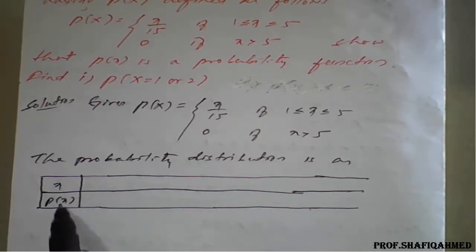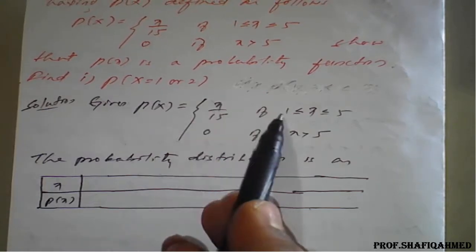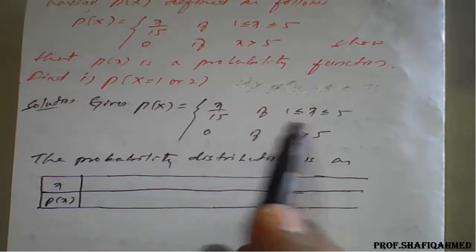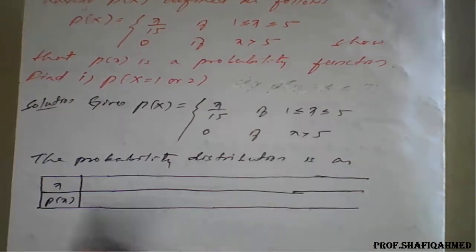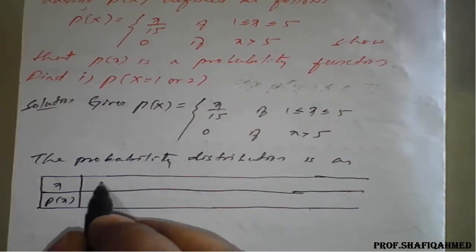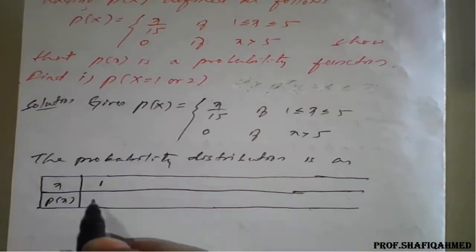X and P of X. Here X will take the value 1, 2, 3, 4 and 5. When X is 1, this will become 1 upon 15.